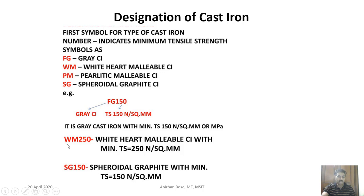Similarly, WM 250 means white heart malleable cast iron with a minimum tensile strength of 250 megapascals. SG 150 indicates spheroidal graphite cast iron with a minimum tensile strength of 150 megapascals. So the designation is based on mechanical properties, specifically tensile strength.